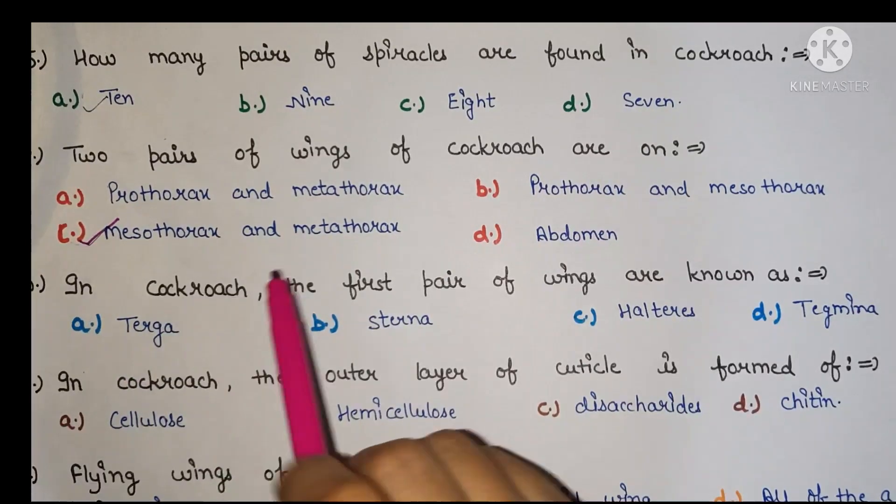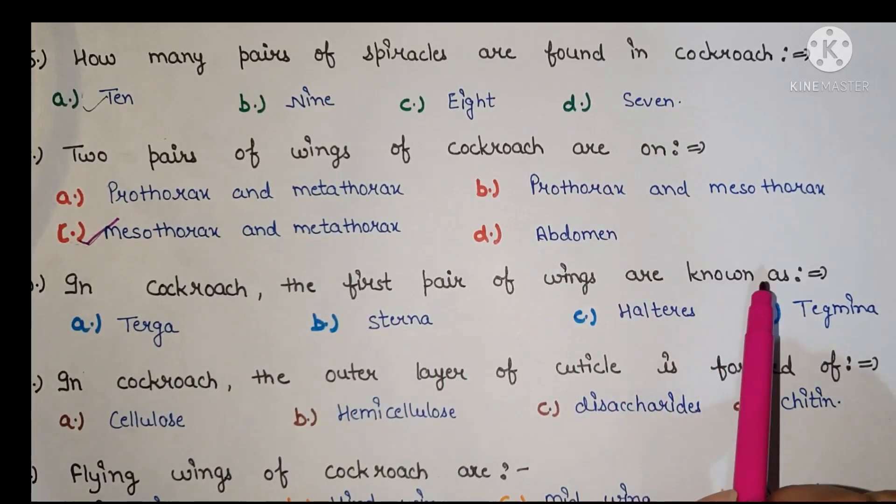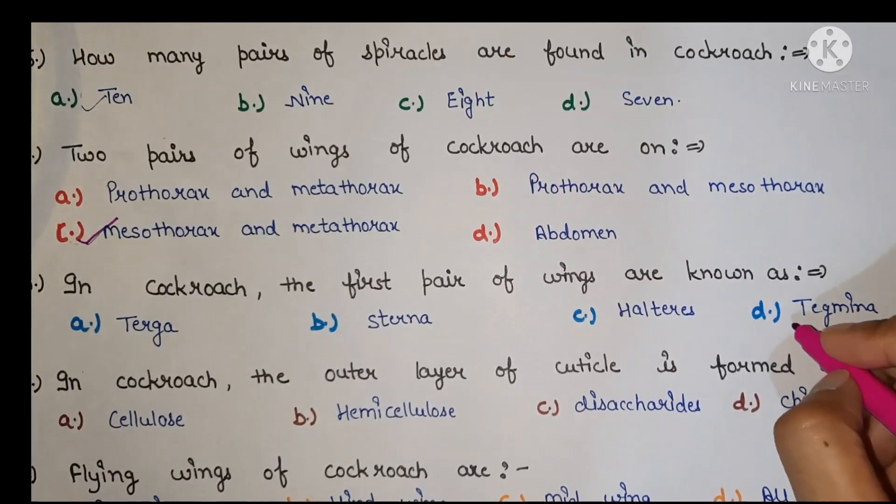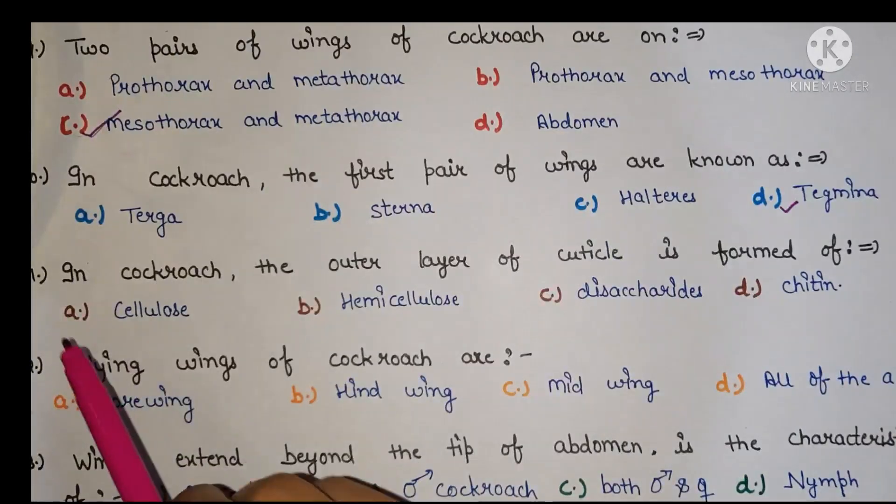Next, in cockroach the first pair of wings are known as, the right answer is tegmina.